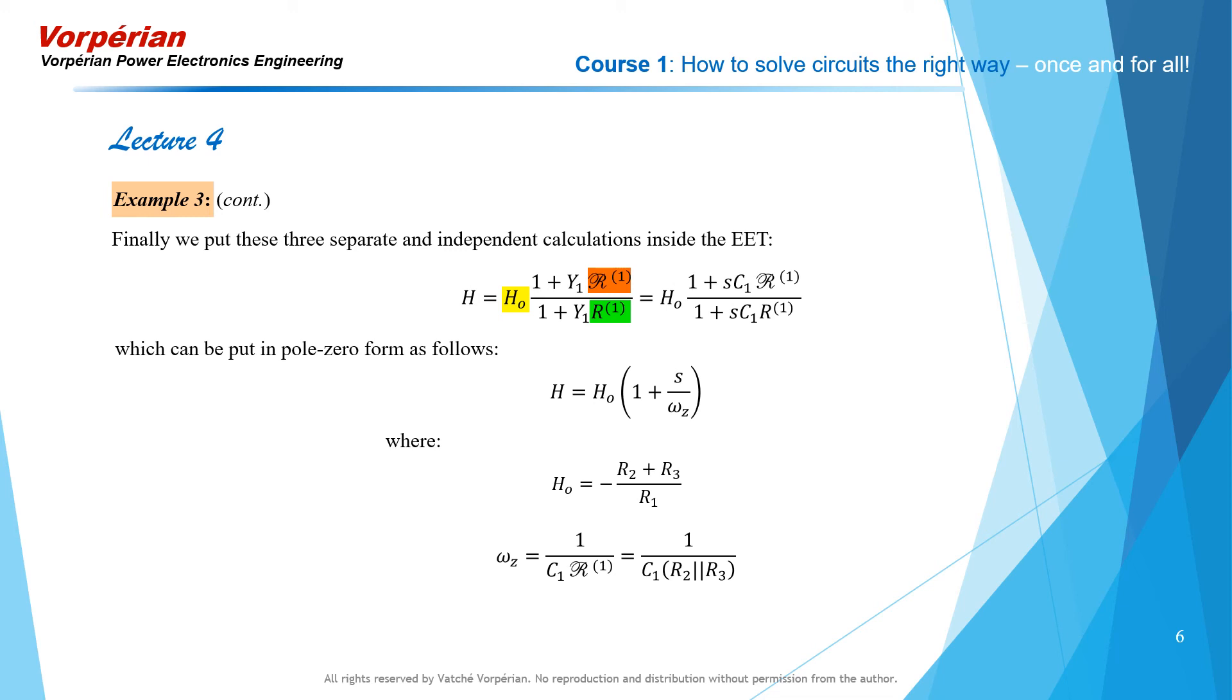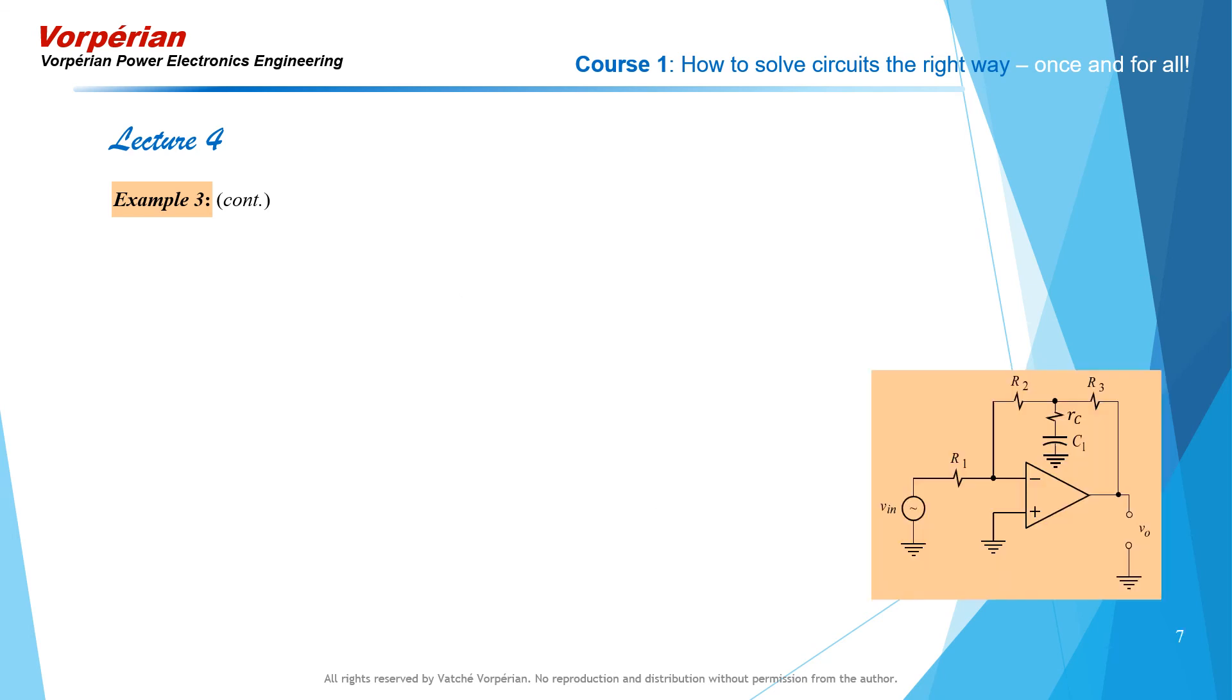What if the capacitor had a parasitic resistance in series with it? Or what if we had deliberately added a capacitor in series with that capacitor? What would our transfer function have been?